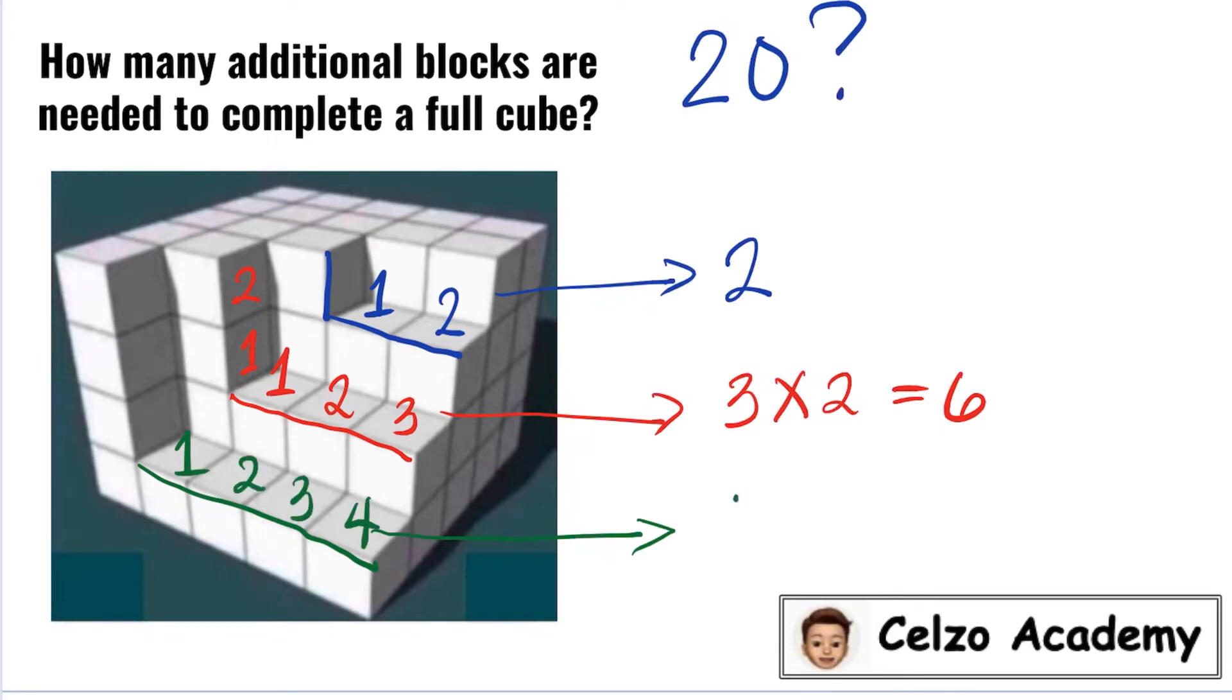So for the first layer, we have 4 blocks and we have 1, 2, 3 layers. So we need to do 4 times 3. So for this part of the shape, we need a total of 12 blocks.